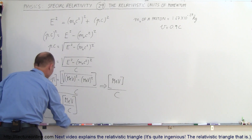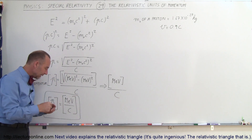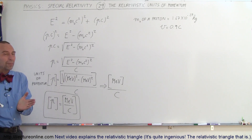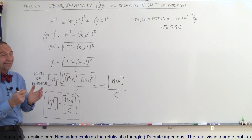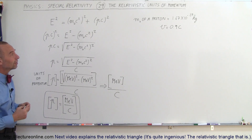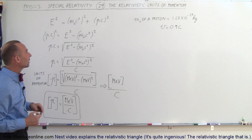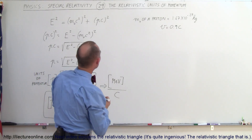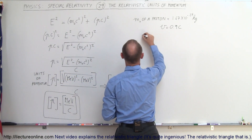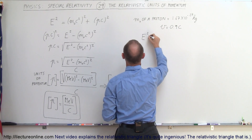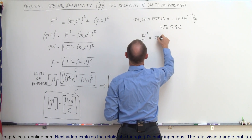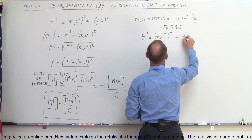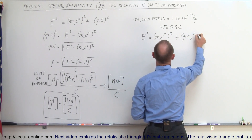That's how we typically, in relativity, write the units of momentum. Let's do a little example to show you this and see if that makes sense. We have a proton moving at 0.9c. We use the same equation: the total energy squared is equal to M-sub-naught C squared quantity squared, plus the momentum times the speed of light quantity squared.